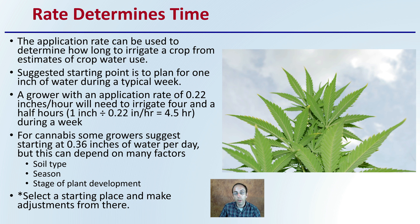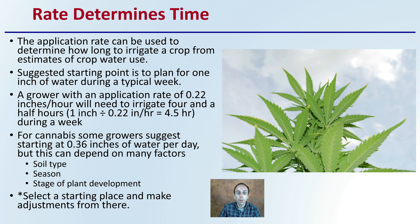That doesn't mean every Monday the plants get four and a half hours — you'll want to space that over the week, so that within seven days there are four and a half total hours of irrigation time. For cannabis, some growers suggest starting at 0.36 inches of water per day, but this depends on many factors: soil type, season, and stage of plant development. Select a starting place and make adjustments from there — one inch per week is a good, stable starting point.